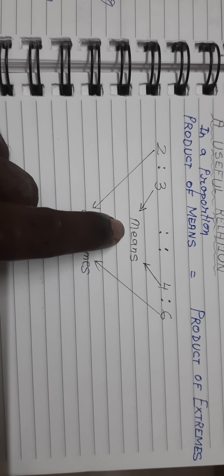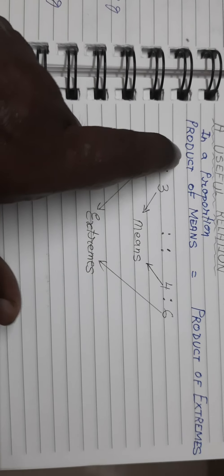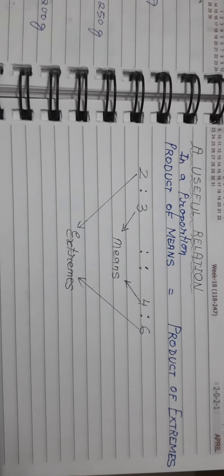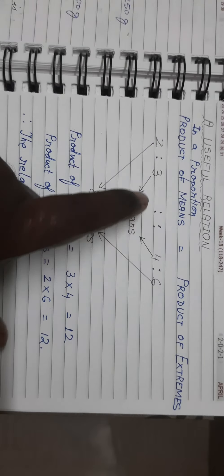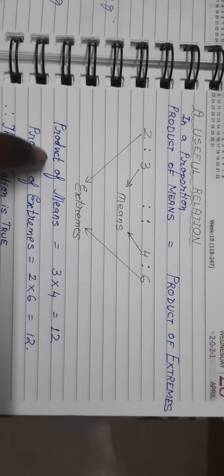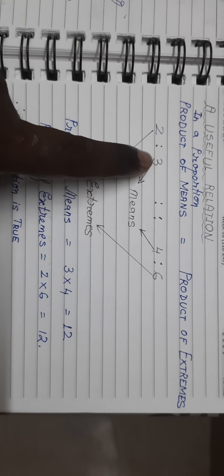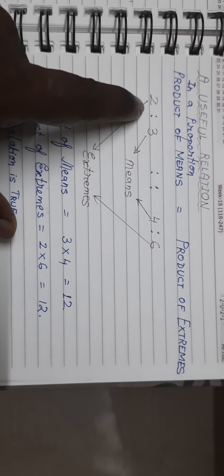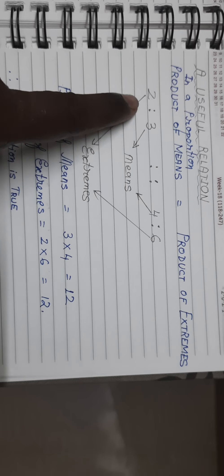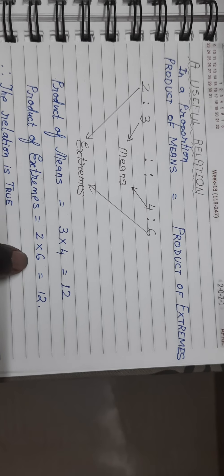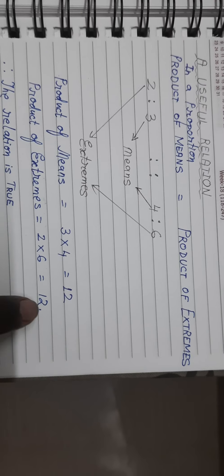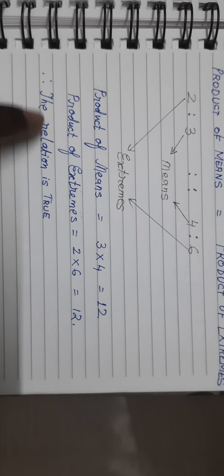Let us apply this relation and verify whether it is true. In this proportion, product of means — product means multiplication — so we multiply the means, which are 3 and 4: 3 into 4 is 12. Product of extremes: the extreme numbers are 2 and 6, so 2 into 6 is also 12. Product of means comes to 12, and product of extremes is also 12. Therefore, we can say that the relation is true.